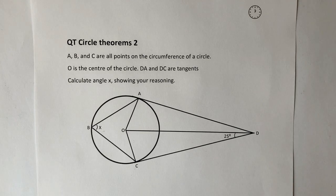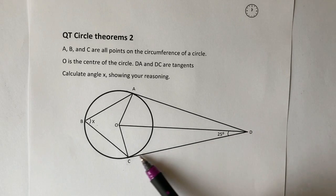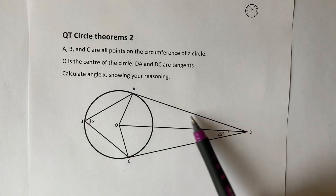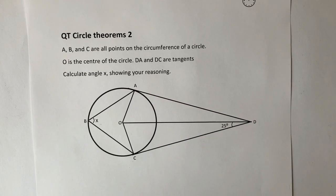Okay, so the first thing is we need to just make sure that we read it okay and we're being told that DA and DC, so in other words, this line along here and this line along here are both tangents.